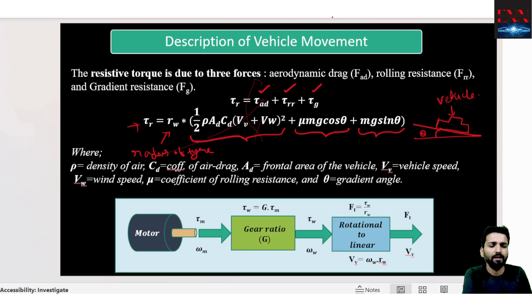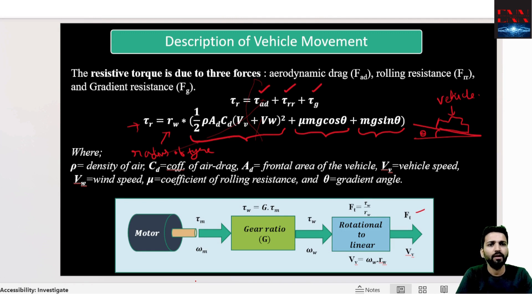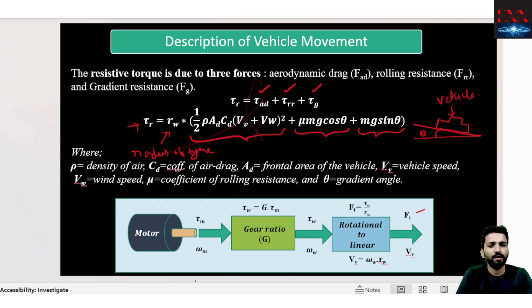A motor and the force are related in that force equals torque divided by the radius of the tyre. The motor is always coupled with a gear ratio, so the motor might not have sufficient torque. We use a gear ratio to multiply the torque. If the gear ratio is 5 and the motor produces 20 Nm, we get 100 Nm at the tyre.